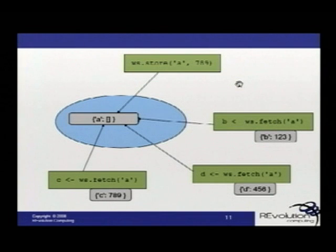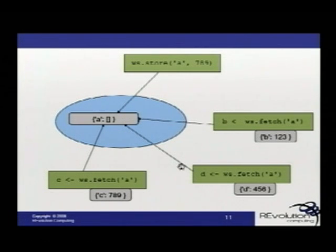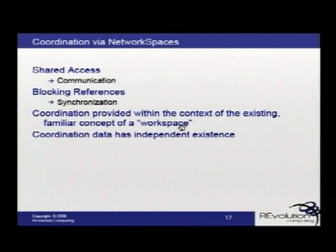We could store a whole series of values — starting with values 1, 2, and 3 assigned to A, then 4, 5, and 6 to A, then 7, 8, 9 to A. We could then fetch them sequentially, and they would depopulate A. So we have a blocking mechanism as well. Shared access via communication with blocking allows synchronization of states, all within the familiar concept of a workspace. This allows a statistician to write code in a way they can understand — they don't have to get down to the low levels of writing a communication mechanism. Coordinating the data is independent of the code they write; it's all done by the Network Spaces server.